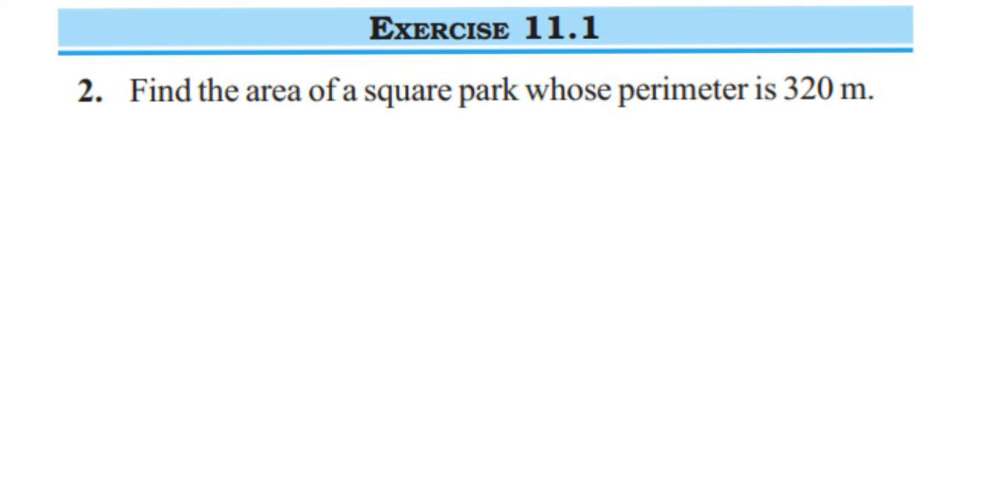Hey everyone, here is a question from exercise 11.1, the second question. The chapter is perimeter and area of class 7 maths. The question is: find the area of a square park whose perimeter is 320 meters.